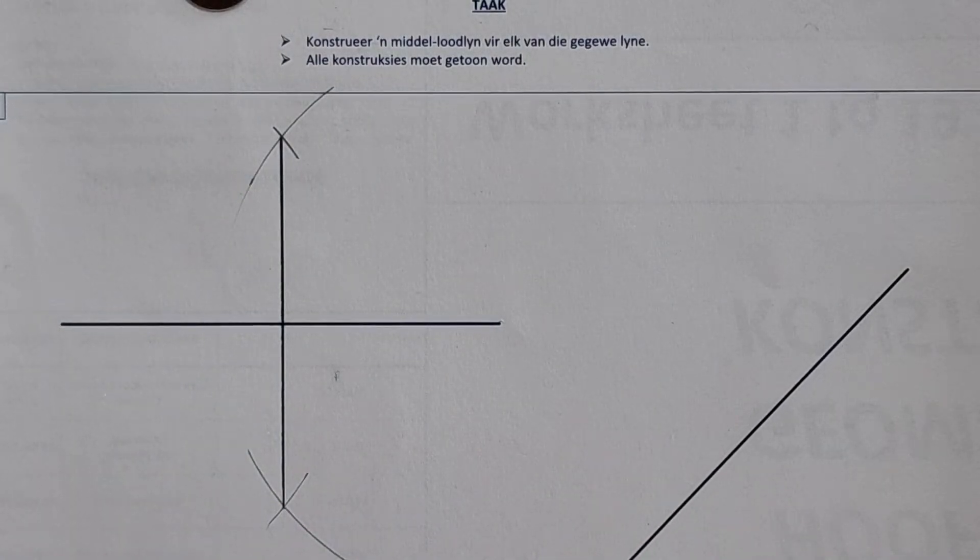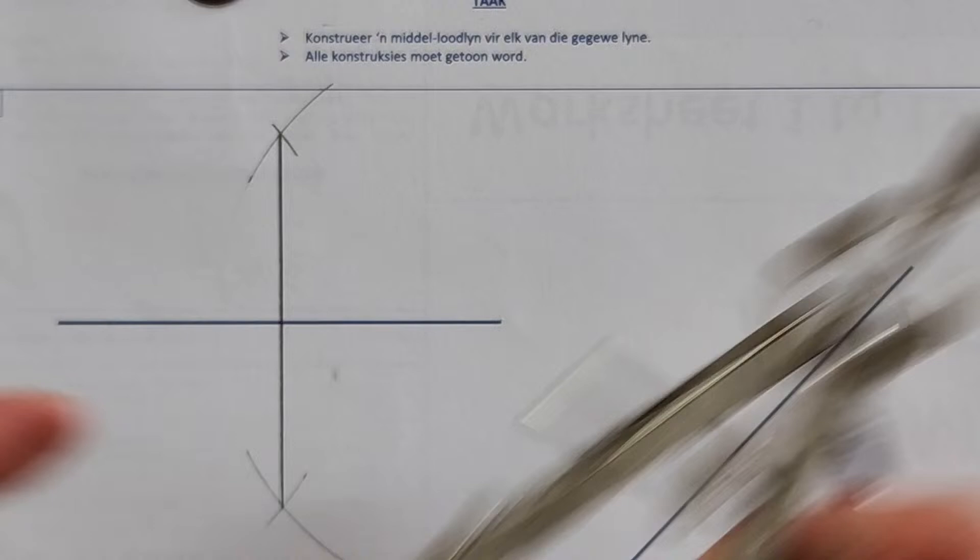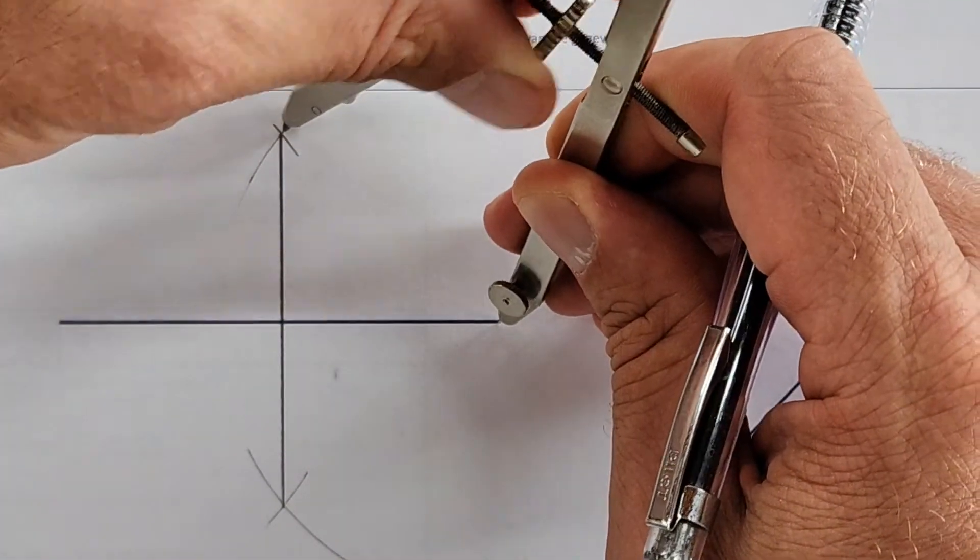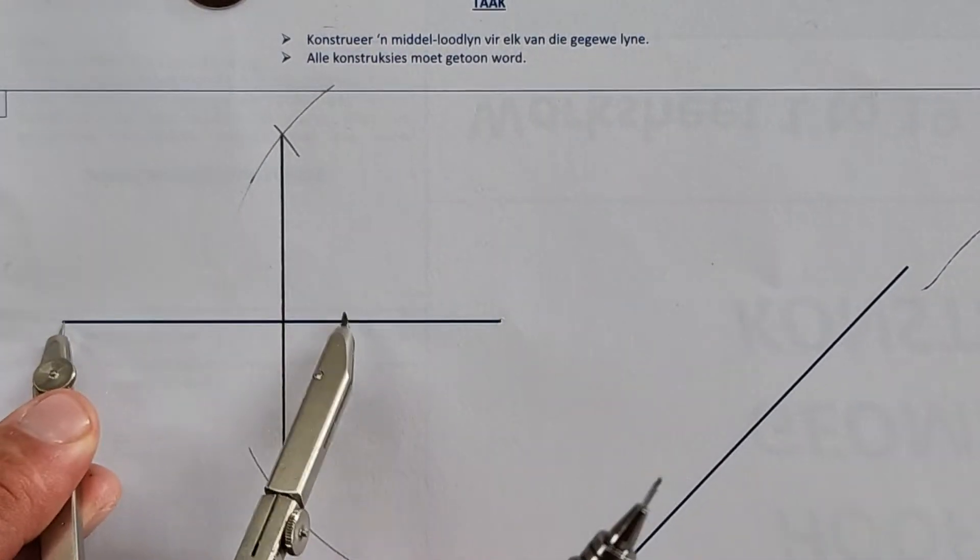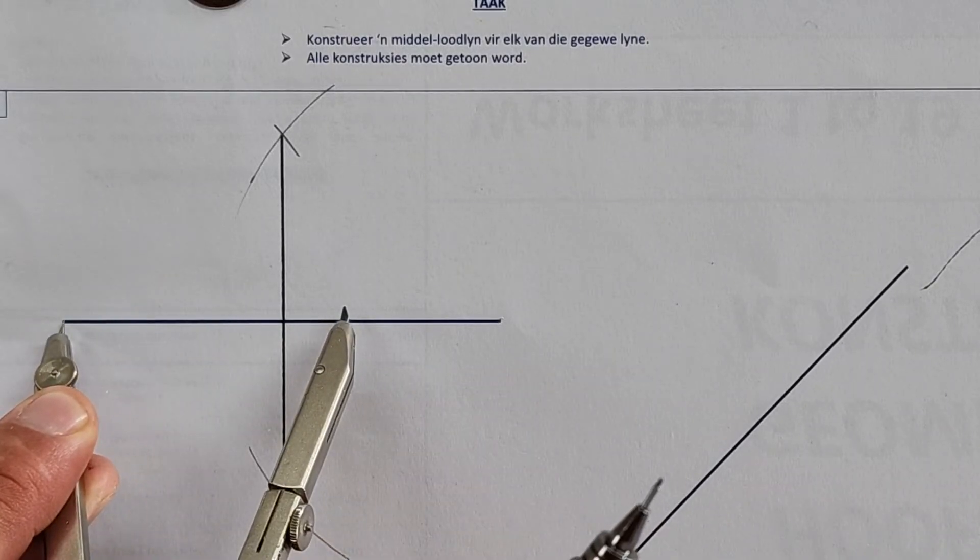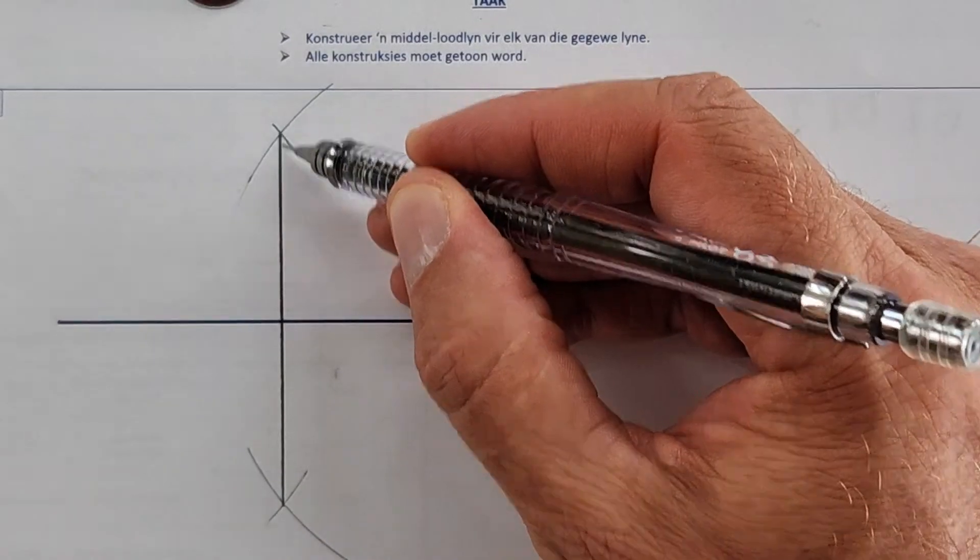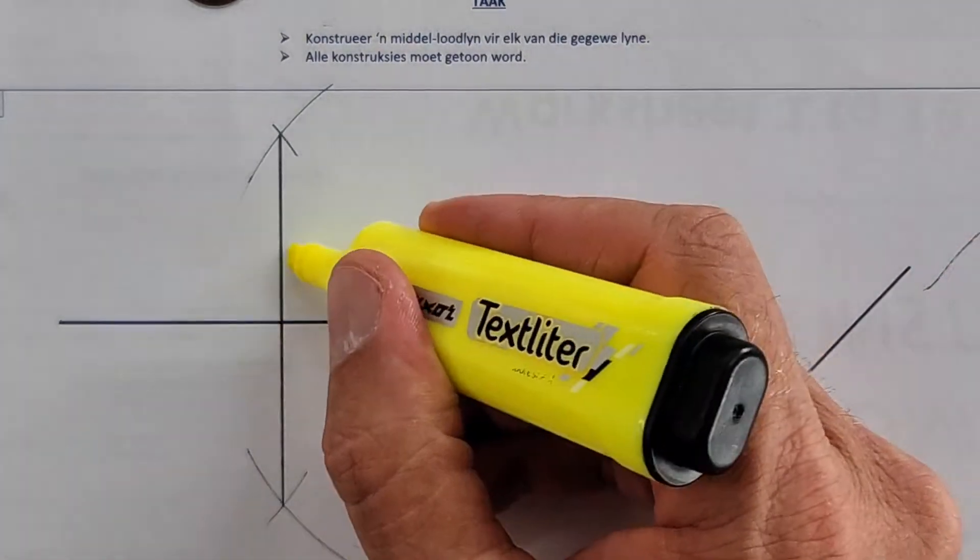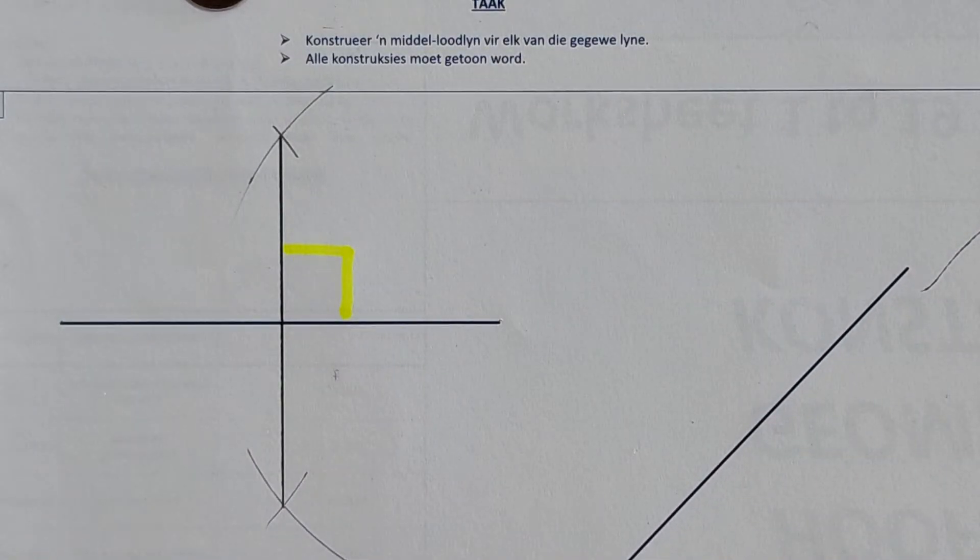We're going to flip our compass, keeping the radius exactly the same, doing another arc and another arc. And where they bisect, that is the perpendicular bisector. There we go to the end of the line. Now I'm going to draw the middle lood line. And that is 90 degrees. That's 90 degrees.